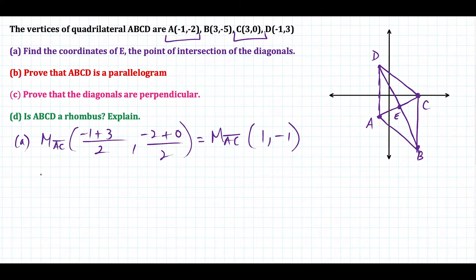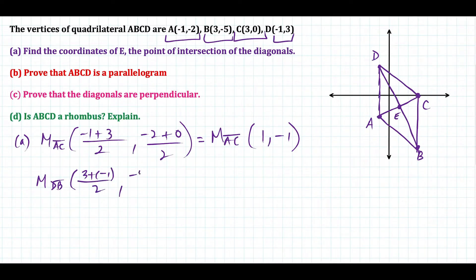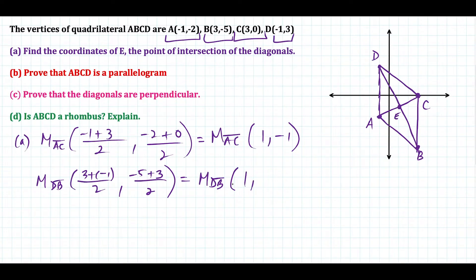So far, so good. Now the next diagonal is DB. We find the midpoint using points B and D: three plus negative one, divided by two, comma, negative five plus three, divided by two. Simplifying: two divided by two gives us one, and negative five plus three is negative two, negative two over two is negative one. The coordinates match. So to answer part A, the coordinates of E, the intersection of the diagonals, is at one, negative one.